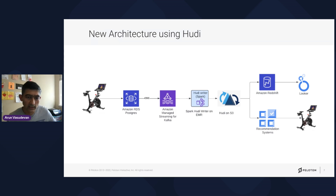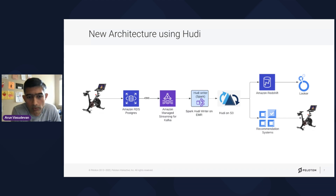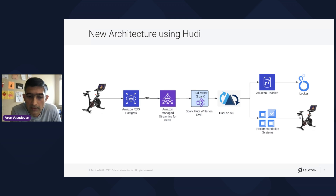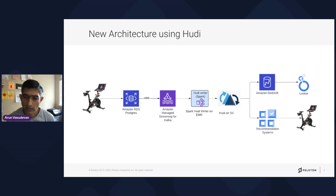Once we introduced Hoodie, the data from RDS PostgreSQL is captured via change data capture using Debezium, which pushes it into MSK — Kafka. From Kafka, the data is read using a custom Spark Hoodie writer (I'll cover why we used a custom writer later), and then written to an S3 data lake on top of Hoodie.